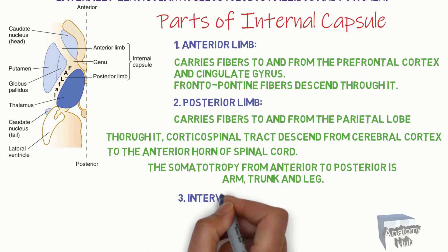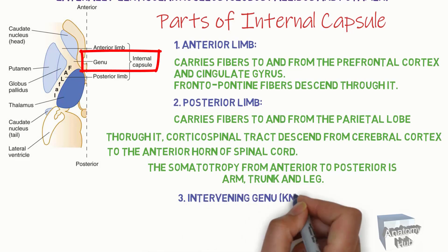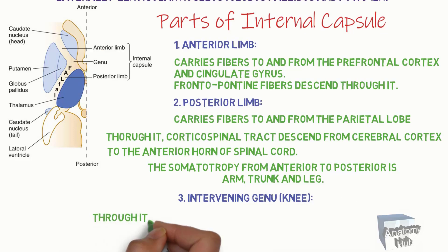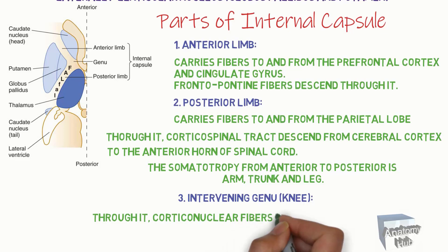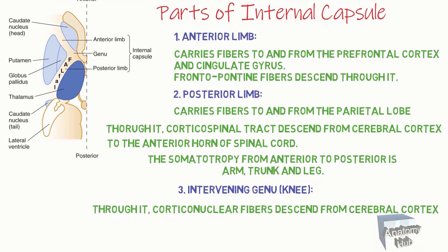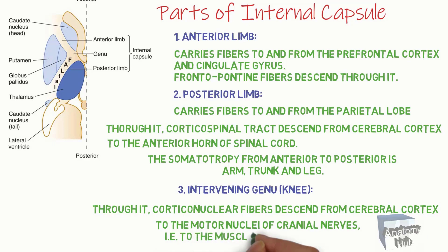Part 3: Intervening genu, or knee. Through it, corticonuclear fibers descend from the cerebral cortex to the motor nuclei of cranial nerves — that is, to the muscles of the head and neck.